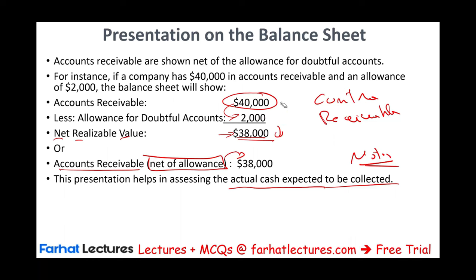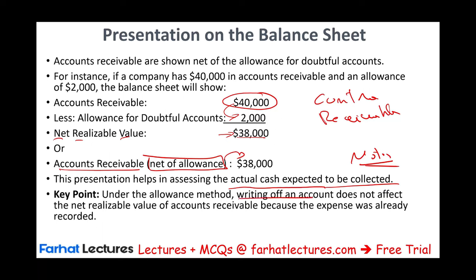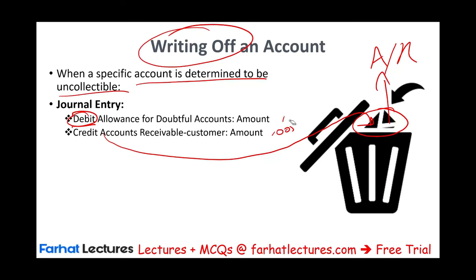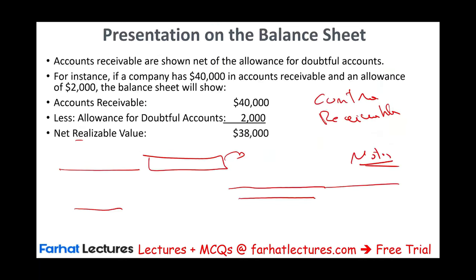Under the allowance method, writing off an account does not affect the net realizable value. For example, if we identify a balance of $500 to be uncollectible, we debit the allowance $500 and credit the receivable $500. So receivable goes from $40,000 to $39,500, and the allowance goes from $2,000 to $1,500. Notice after we write off an account, the net realizable value is still $38,000 — because you are reducing both the receivable and the contra allowance at the same time. That's very important to remember.